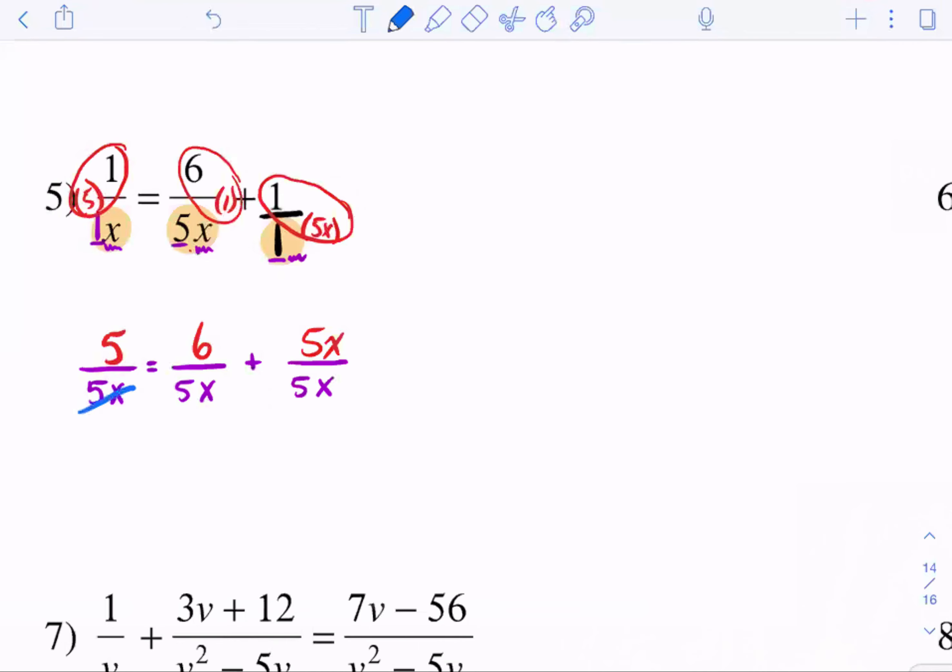Now that the denominators are the same, we can cross them out, and we can rewrite our equation. So can we solve that now? Absolutely. 5 equals 6 plus 5x. Subtract the 6. And then divide by 5. Now I ask myself, if x equals negative one-fifth, when I put it back here, will I get a zero denominator? Nope. So then this is good. This is my final answer.